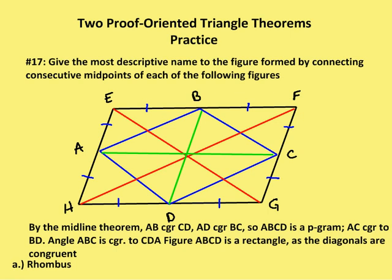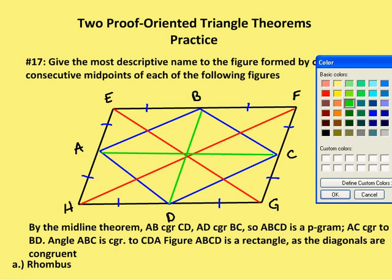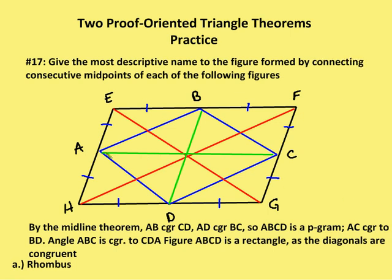HF and EG are my two diagonals. As a result, I know that AB is congruent to DC because by the midline theorem, the segment that joins the midpoints of triangle EHF is going to be half of HF. So DC and AB are congruent by the midline theorem. I also have BC and AD that are congruent, again by the midline theorem — the base of the triangle is EG. So now I have a parallelogram in ABCD.